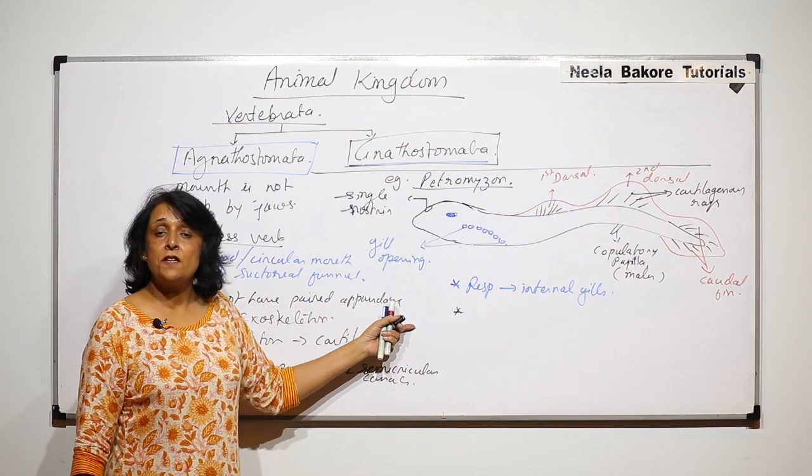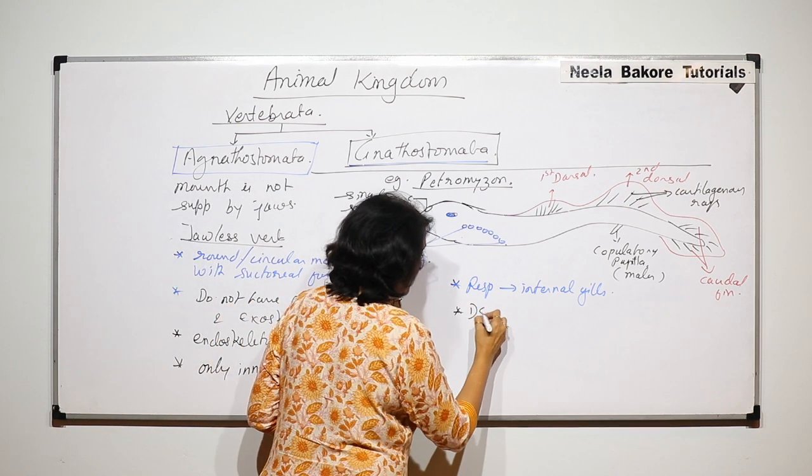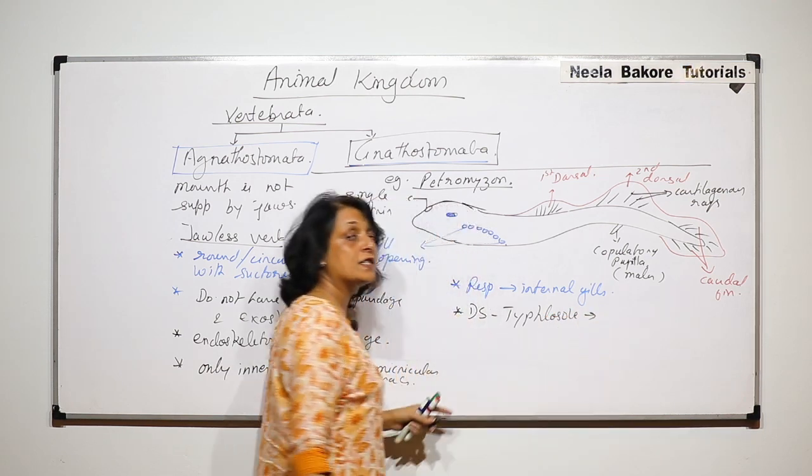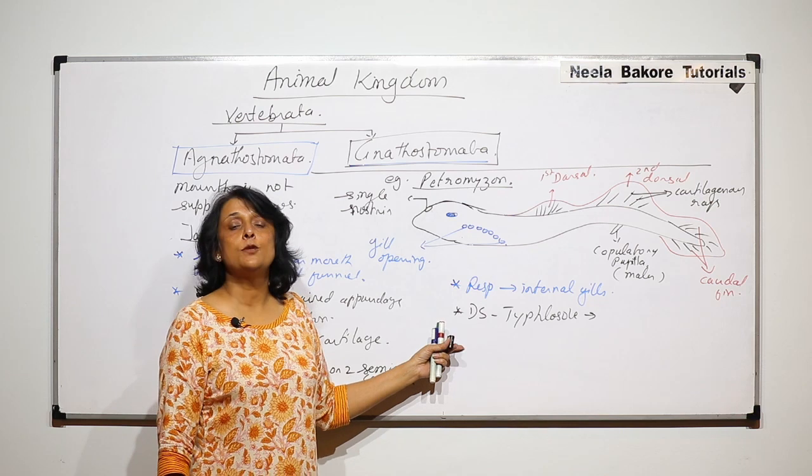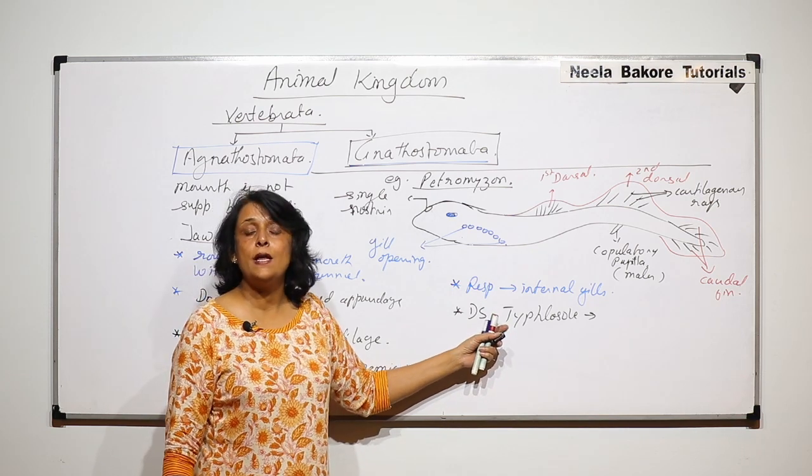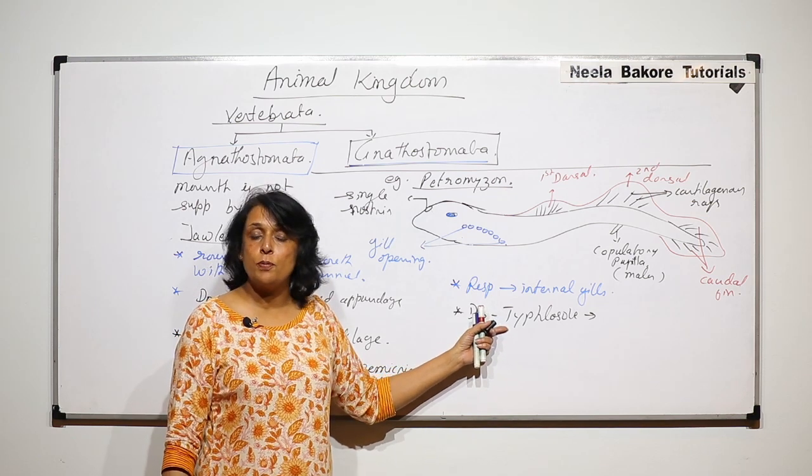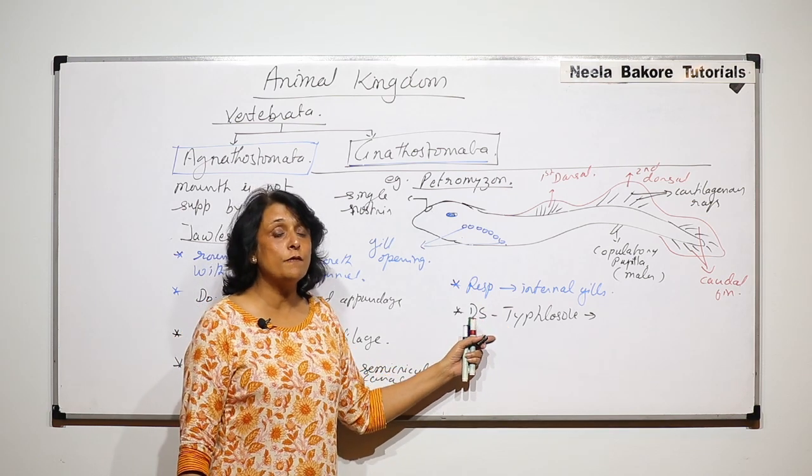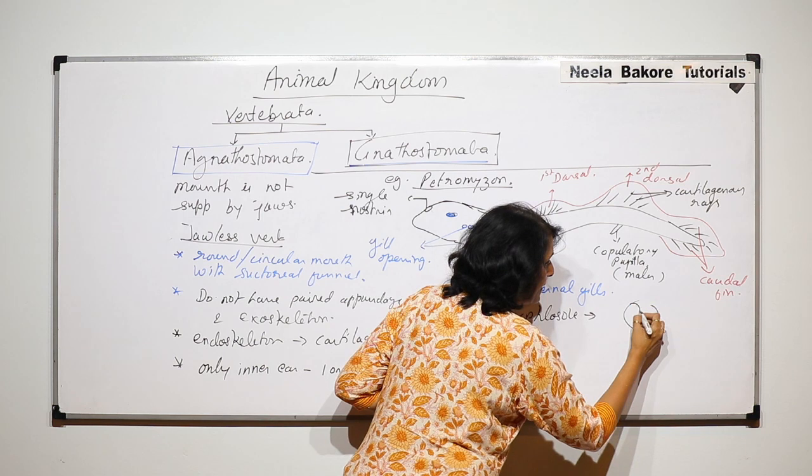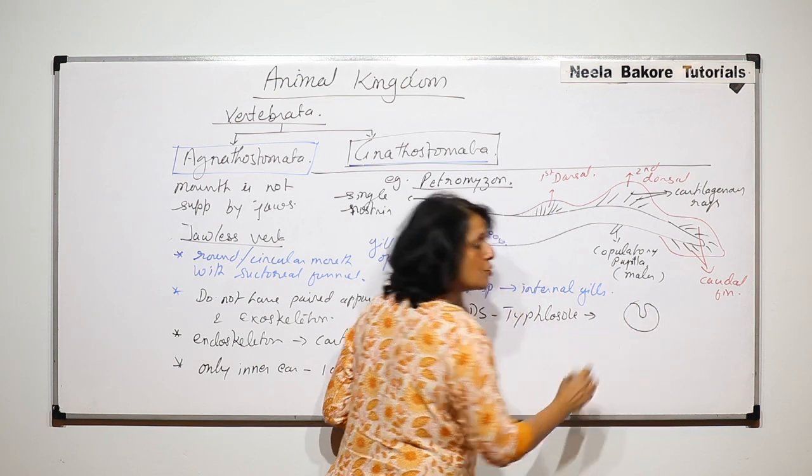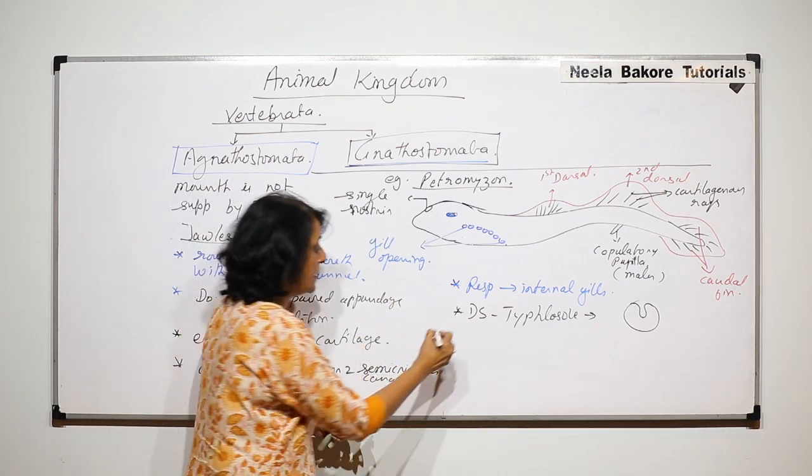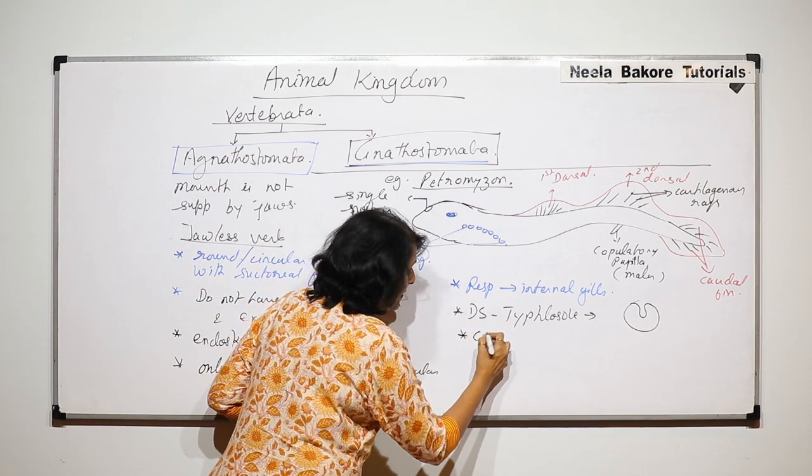In digestive system they have typhlosole. Typhlosole is a fold in the alimentary canal, specially in the part where absorption takes place, and this fold increases the surface area for absorption. We have talked about this typhlosole in earthworms. If you take a section of intestine you find that there is a fold so that the surface area for absorption increases.